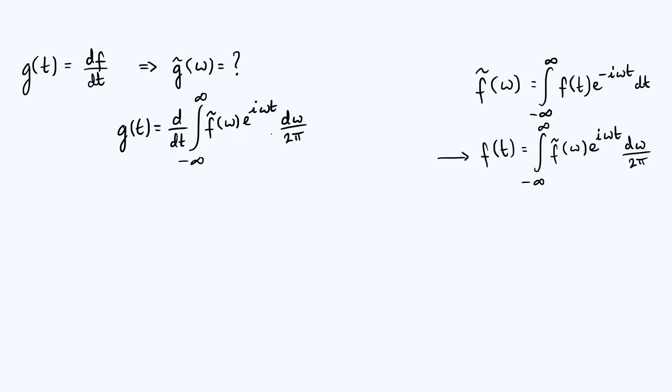Now the nice thing here is that the only time dependence in that whole expression is in that complex exponential. So you can take your time derivative inside the integral and differentiating just pulls down a factor of i omega. So this becomes the integral from minus infinity to infinity of f tilde of omega times i omega e to the i omega t d omega over 2 pi. And remember that this is all supposed to be equal to g of t.